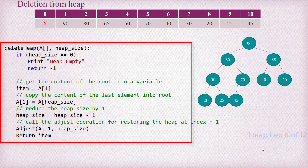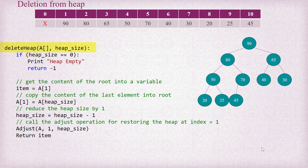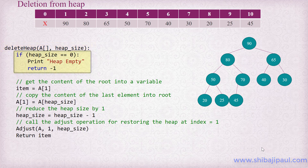The heap delete procedure receives the reference to the 1D array in which the heap is maintained, along with the reference of the heap size. At the beginning, we check if the heap is empty or not, just by comparing the heap size with 0. If the heap size is 0, then the heap is empty, and we return from this procedure as we don't have anything to delete.